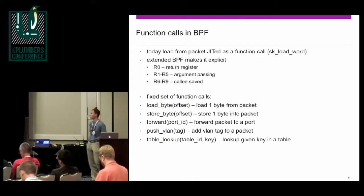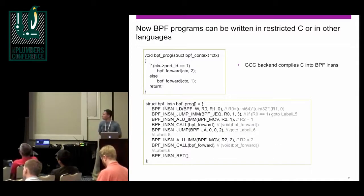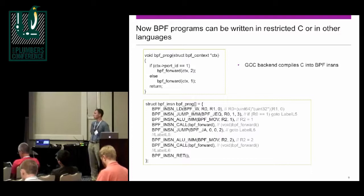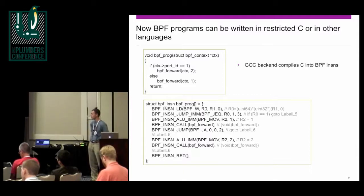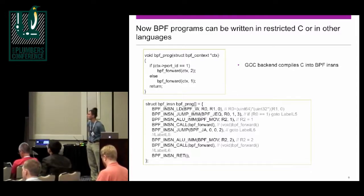The helper function calls include load-byte, load-half, load-word that exist today, plus extensions for store-byte and forwarding. The BPF instructions are written in similar mnemonics as before. In early days you'd have to write your BPF in assembler, which this mnemonic essentially is. But now, with a restricted C and GCC backend, you can write these little programs in C, which makes them much easier to understand.